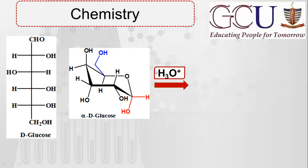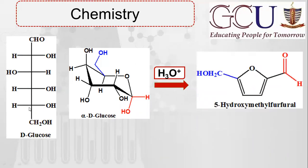Sulfuric acid CH₂OH को कुछ नहीं कहता, लेकिन चारों OH groups से ring बना देता है — carbon 5 और carbon 2 के OH आपस में मिलते हैं, water निकल जाती है, ring close हो जाती है. बाकी 2 OH groups की dehydration से H और OH मिलकर double bond बना देते हैं. इस dehydration से product बन जाता है: 5-Hydroxymethylfurfural. CH₂OH group को Hydroxymethyl कहते हैं, और furfural से पता चलता है कि यह furan ring है.